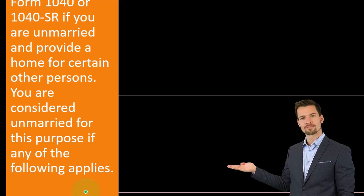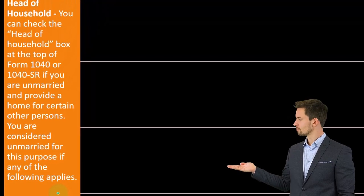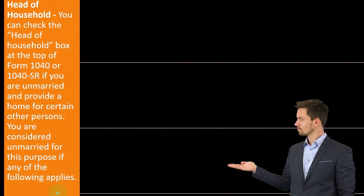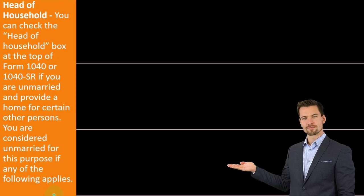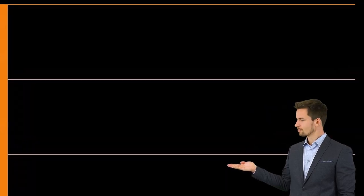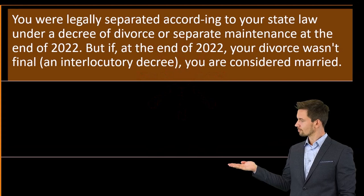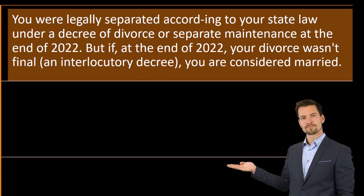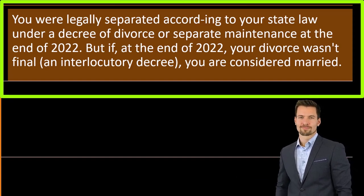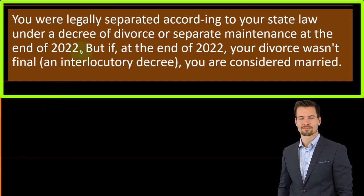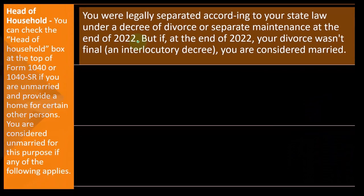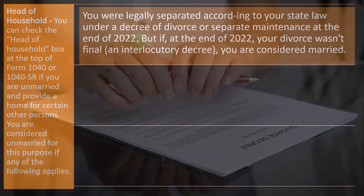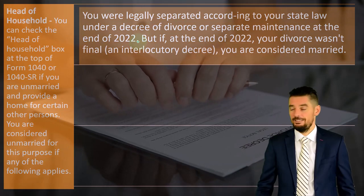You can check the head of household box at the top of Form 1040 or 1040-SR if you are unmarried and provide a home for certain other persons. You are considered unmarried for this purpose if you were legally separated according to your state law under a decree of divorce or separate maintenance at the end of 2022. So if you were married and then separated, you might be able to go back to either single or head of household.